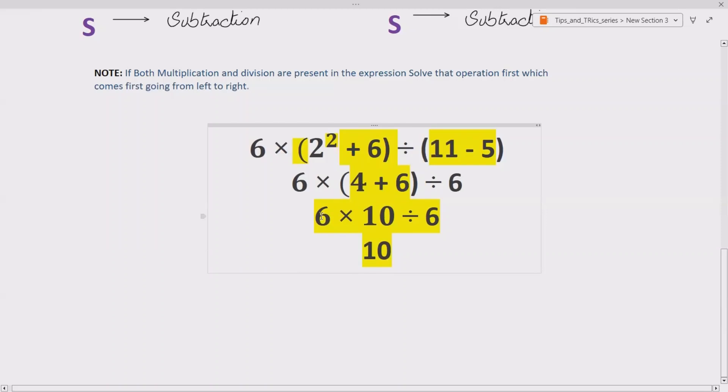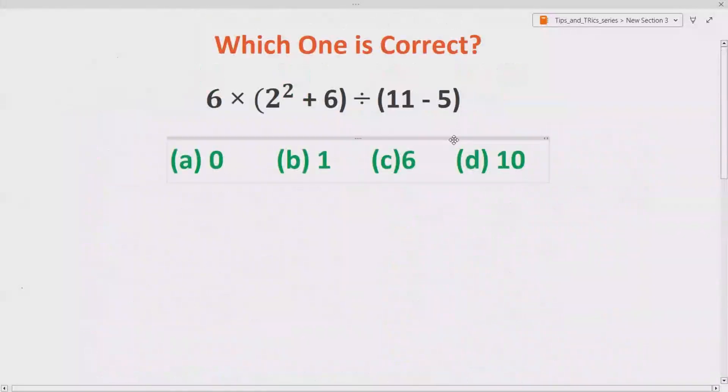Now according to BODMAS, we have to multiply first. So 6 multiplied by 10 gives us 60. 60 divided by 6 gives again 10. So it means the correct answer is D.